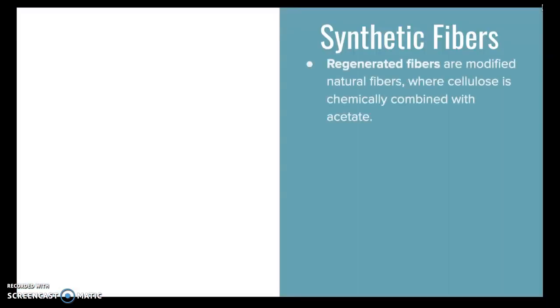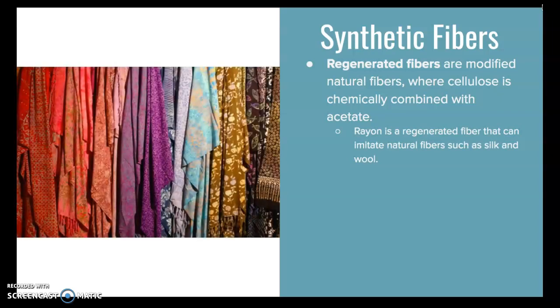Regenerated fibers are modified natural fibers where cellulose is chemically combined with acetate. Cellulose is a sugar found in plants and is usually involved in different plant fibers as well. Rayon is a regenerated fiber that can imitate natural fibers such as silk and wool. In this picture, you've got artificial silk made from rayon.